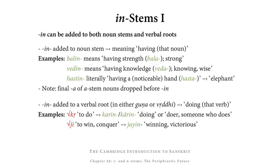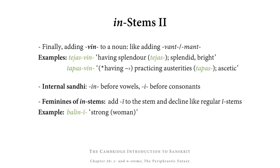When IN is added to a verbal root — which can stand in guṇa or vṛddhi — we get an adjective meaning 'doing that verb': so from kṛ (to do) we get kārin or karin meaning a doer; from ji (to win) we get jāyin meaning victorious. There is also a sub-type ending in -vin: adding -vin to a noun is like adding English '-ful' or '-ous', giving an adjective meaning 'having that noun'. So from tejas (splendor) we get tejasvīn (splendid), and from tapas (religious austerities) we get tapasvīn meaning an ascetic.